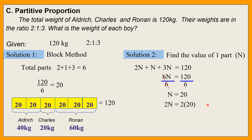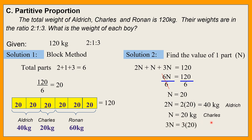So one part is 20. Yung two parts or 2N is 2 times 20 — this is 40 kilograms for Aldrich. Yung one part or N is 20 kilograms, that is for Charles. And yung three parts is 3 times 20 — that is 60 kilograms for Ronan.